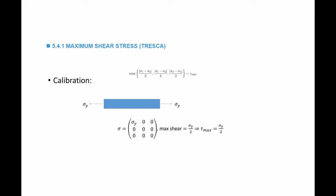To calibrate this material model, I take a piece to the lab, pull on it, find sigma yield, and then tau max is equal to half sigma yield.